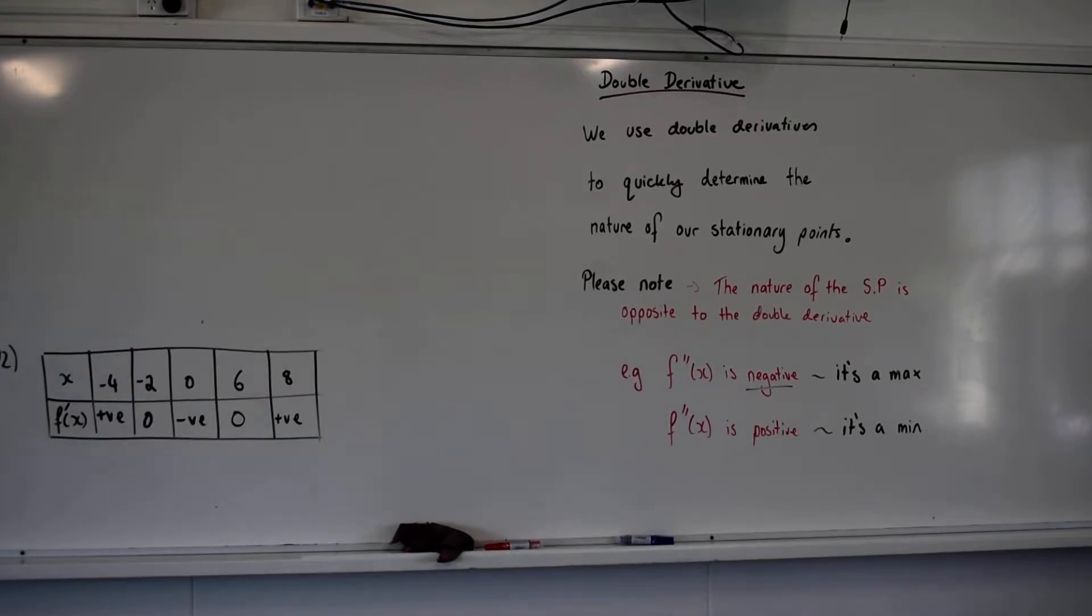We would expect that because with an order two polynomial, what's an order two polynomial? What's the other name for that? Quadratic. We have how many stationary points? What's the most number of stationary points you can have with a quadratic? One.